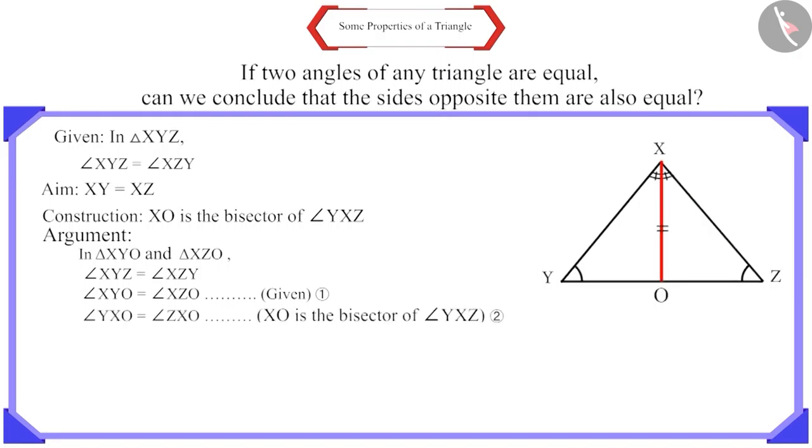And we constructed XO, which is the bisector of angle YXZ. Therefore, angle YXO and angle ZXO will be equal.